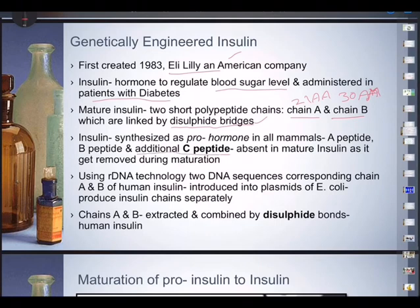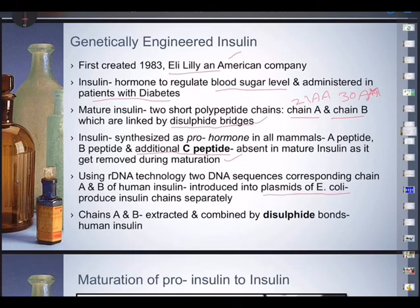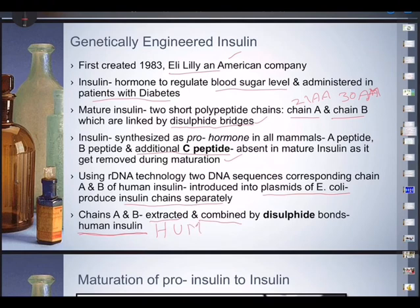The two chains are interlinked with disulfide bridges. Insulin is synthesized as a pro-hormone in all mammals, with A peptide, B peptide, and an additional C-peptide, which gets released and is absent in mature insulin as it is removed during maturation. Using rDNA technology, two DNA sequences corresponding to Chain A and B of human insulin were introduced into plasmids of E. coli, chains were produced separately, combined by disulfide bond, giving rise to human insulin — Humulin.